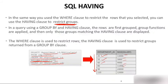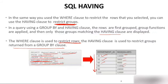In a query using GROUP BY and HAVING, the rows are first grouped, then group functions are applied, and then only those groups matching the HAVING clause are returned. The WHERE clause is used to restrict individual rows but not with group functions. The HAVING clause is used to restrict groups returned from GROUP BY. These are all the theoretical concepts — let me now show you the actual practical implementation using Oracle 10g.